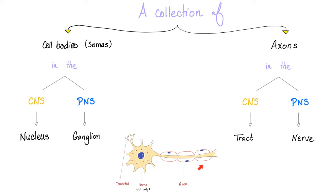Axons: a collection of axons in the central nervous system is called a tract, such as the spinothalamic tract, corticospinal tract, etc. A collection of axons in the peripheral nervous system is a nerve. So instead of telling people 'you're getting on my nerve,' tell them 'you're getting on my axons in the peripheral nervous system.' You will lose all of your friends.